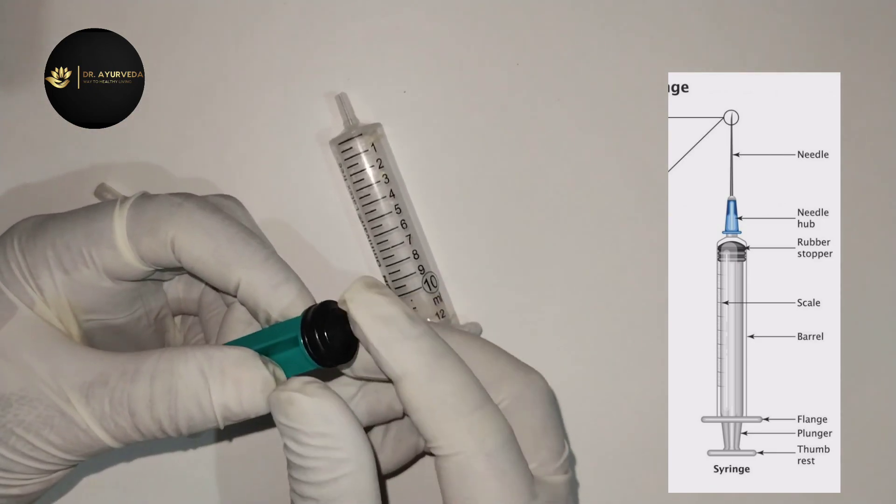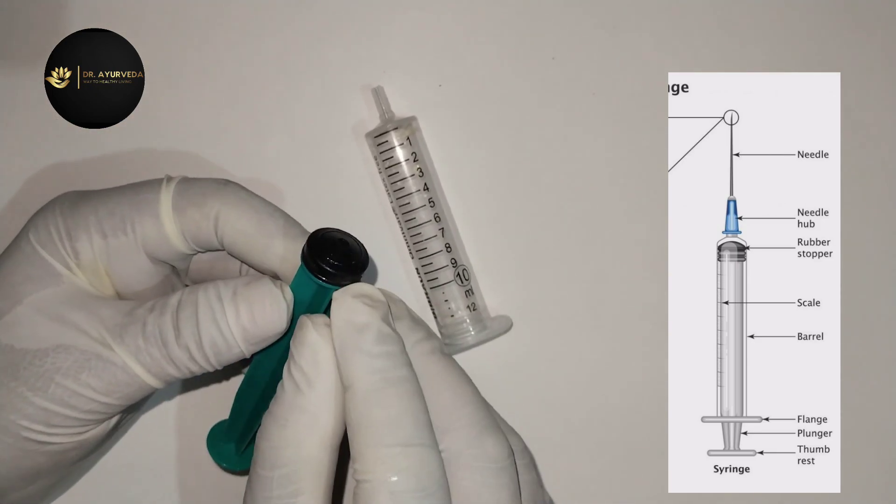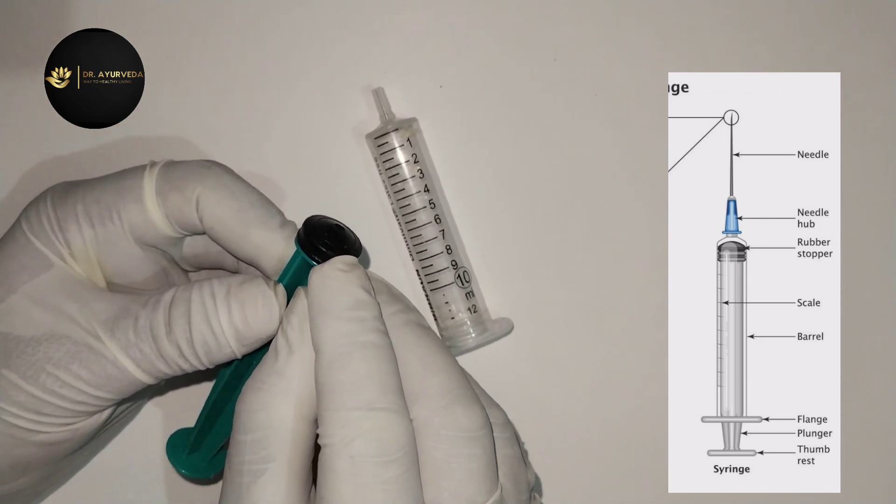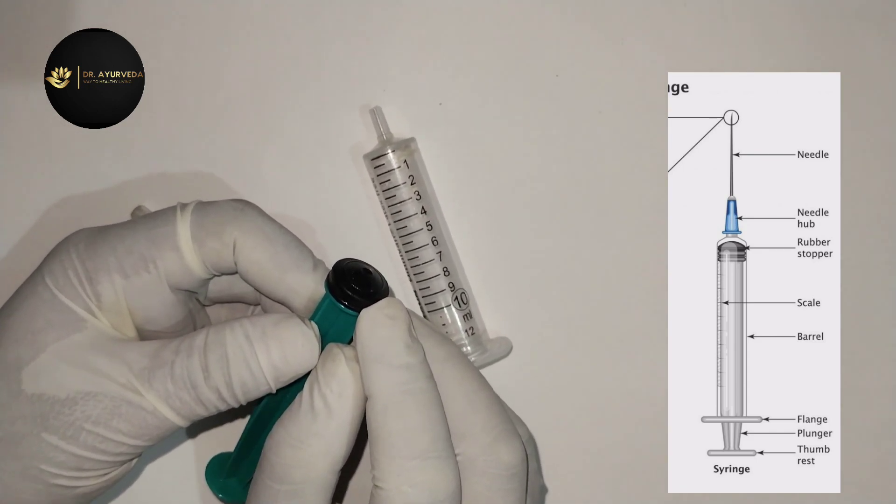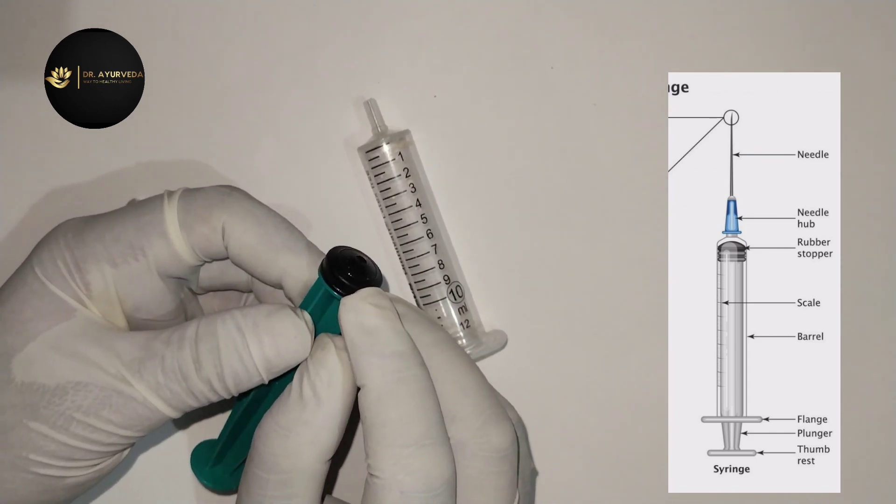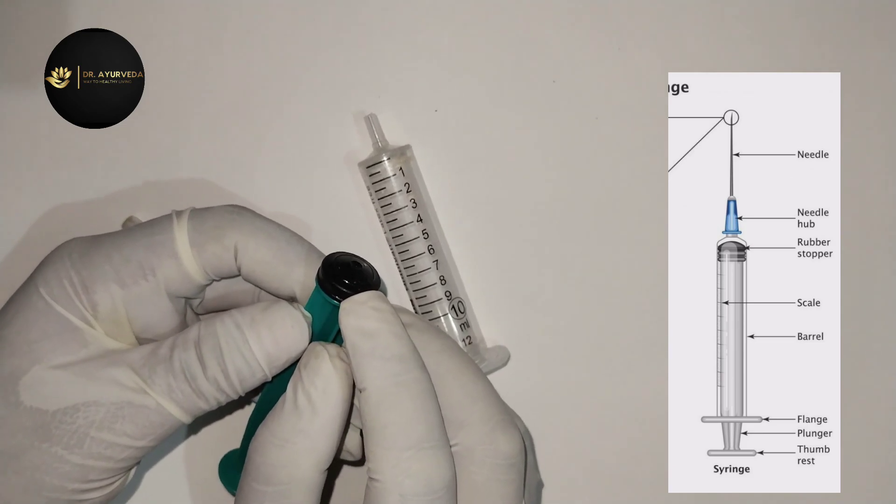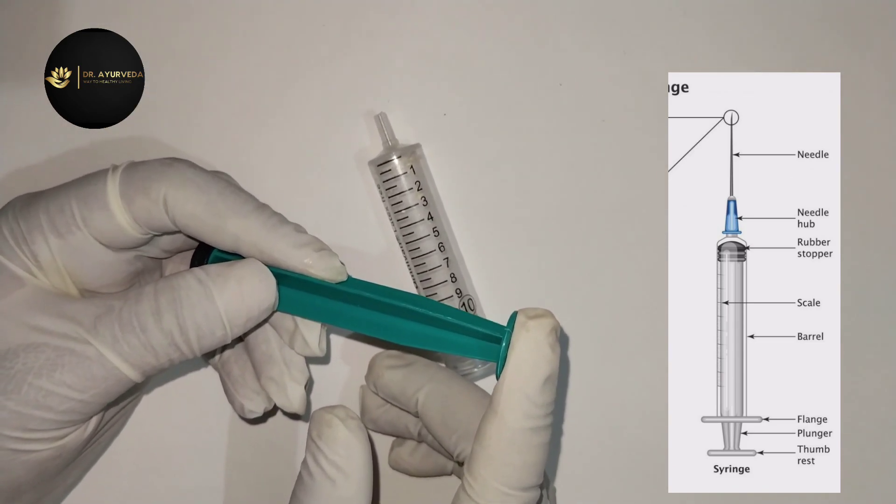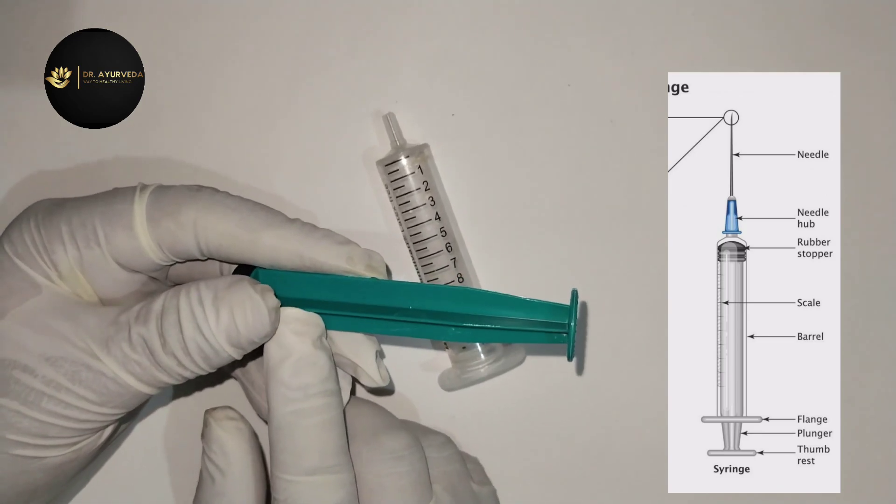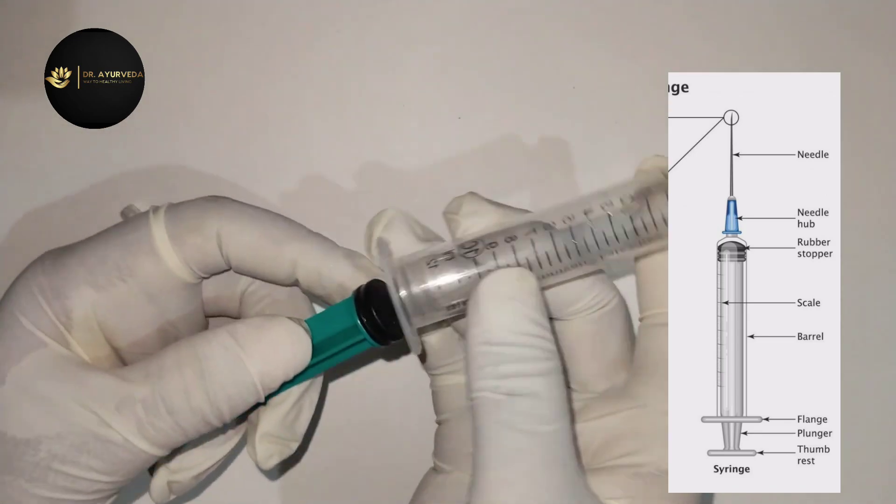First of all, the black area is called stopper. The upper line is called plunger. This area is called plunger.